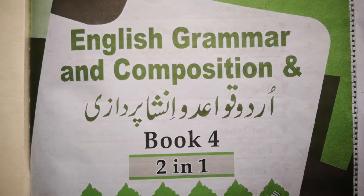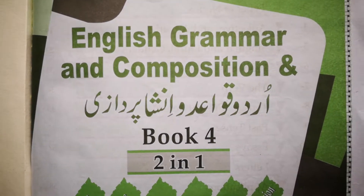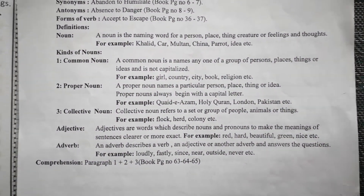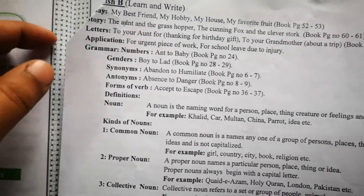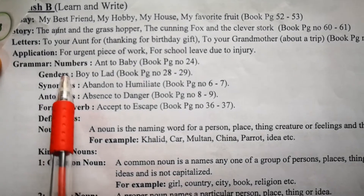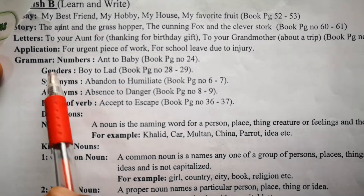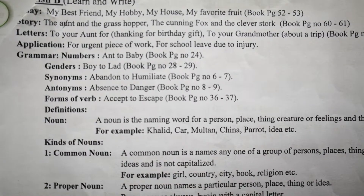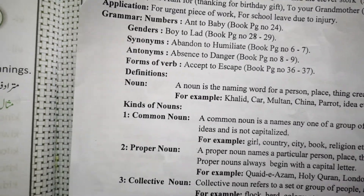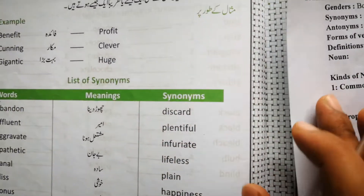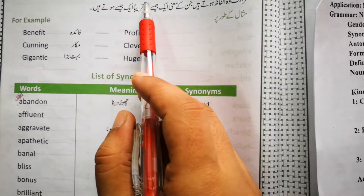Assalamualaikum dear students, I am ready to be here for class. Your son is in English grammar book, page number 6. Synonyms — this is the same. You will see in July, you will see in the grammar portion. Synonyms and genders. Now we will see what you have to remember and where you have to remember. First of all, you have to remember page number 6: synonyms.